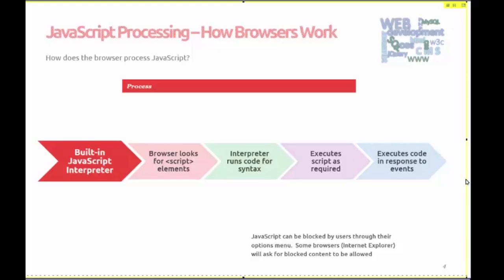The built-in interpreter in a browser looks for any script elements when the page loads. It initially runs through the code checking for syntax, making sure everything is ended correctly. If there's a syntax error, your script will probably stop — it won't crash your whole page, but it will stop running. If it's okay and the script is called, it will execute as needed, in response to events. One thing to be aware of: JavaScript can be blocked by users through their options menus. Some browsers like Internet Explorer ask for blocked content to be allowed. So test turning off JavaScript — what happens to your page if JavaScript is not running?